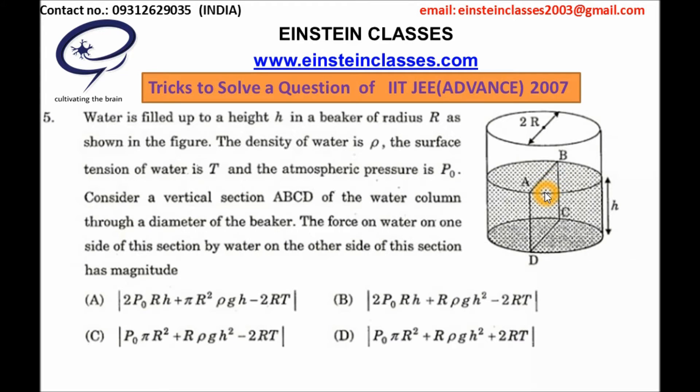Hence if the pressure at each point on the section ABCD will be P note, then the force exerted will be simply P note into area of ABCD. And the area of ABCD is given by AB into BC. The area is 2R into H. That means the force exerted by the atmospheric pressure P note will be simply P note into 2R into H.